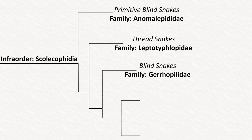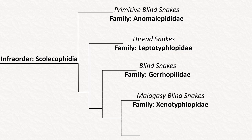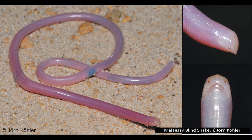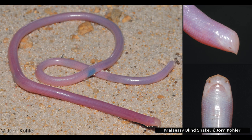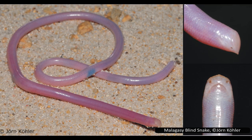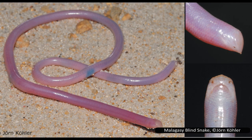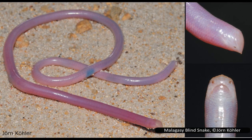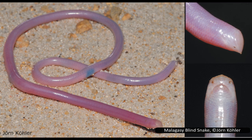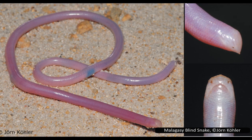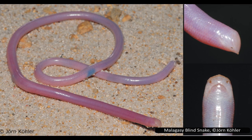The next family is Xenotyphlopidae, or the Malagasy blind snakes. As the name suggests, these are only found in Madagascar. This family has only one genus with two species, though it has been suggested these two should actually be considered normal variation within one species — not widely accepted, but could change in the future. These species are threatened by mining and logging in Madagascar: one is listed as data deficient, but the other is considered critically endangered. Like many blind snakes, little is known about them, but they are assumed to eat ants and be oviparous.